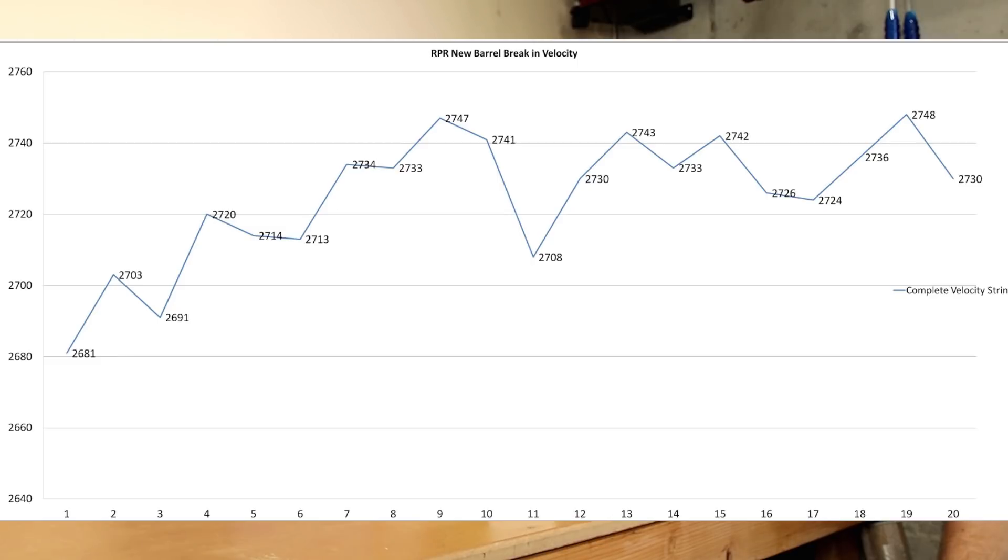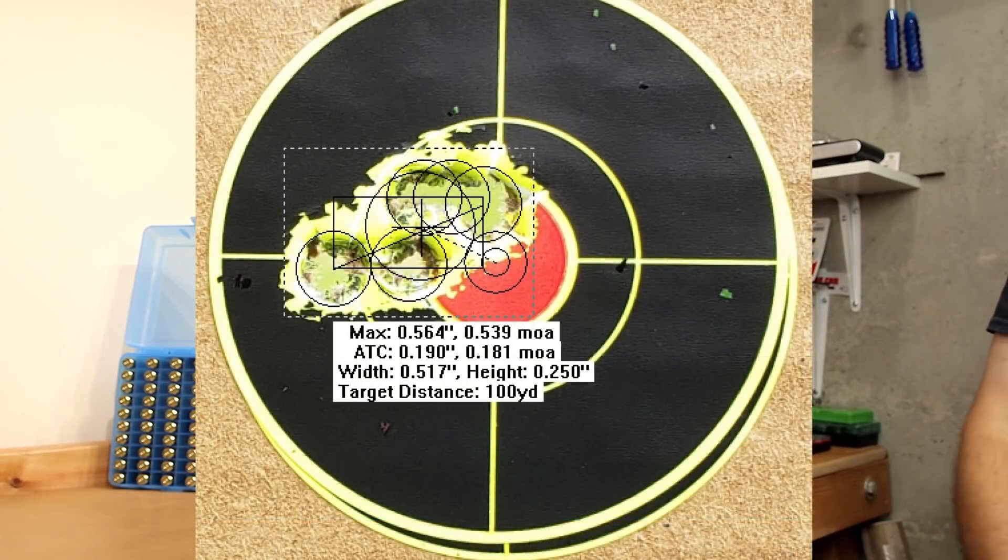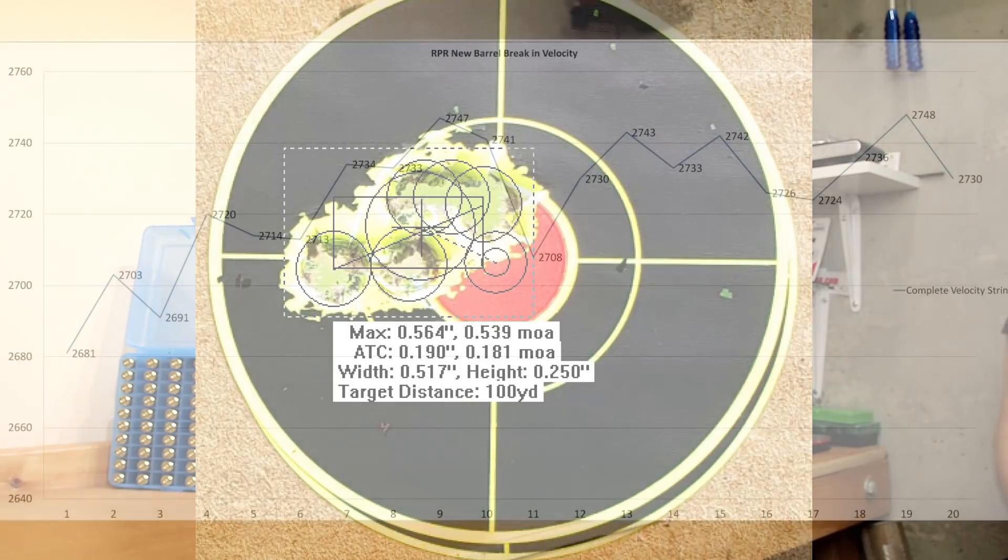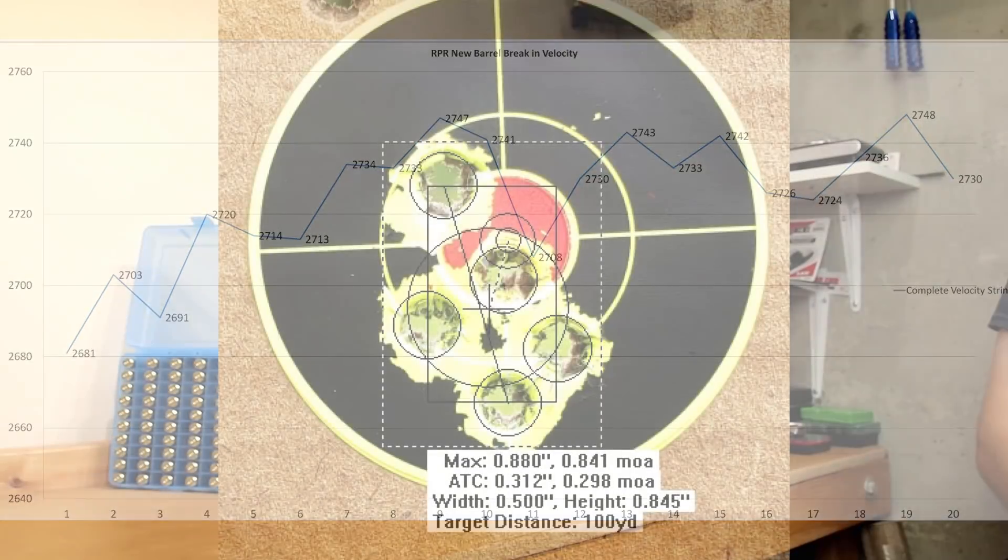We cleaned one more time, and our first shot was again low at 2708 feet per second, and that five-shot group went into .539 MOA. And again, if we remove the first shot, which was our lowest velocity, that's going to bring our extreme spread to 13 feet per second. Our last five-shot group was actually shot without cleaning, so this is the first legitimate five-shot group we've shot, and somehow .841 MOA is what we ended up with.